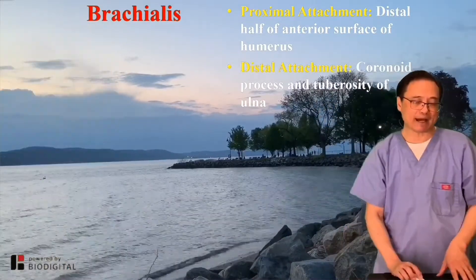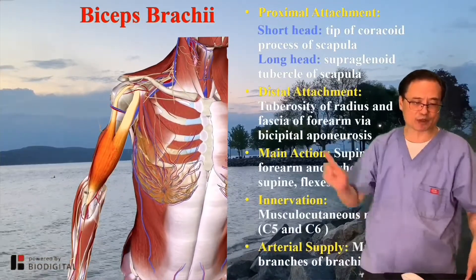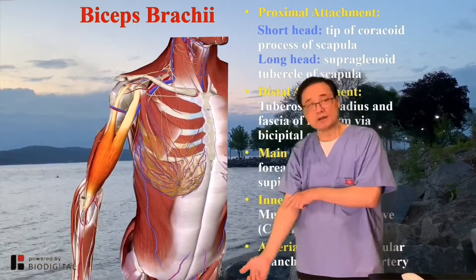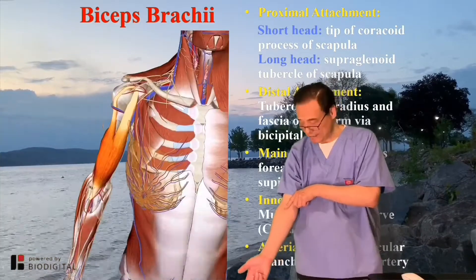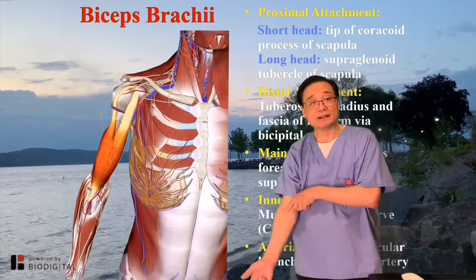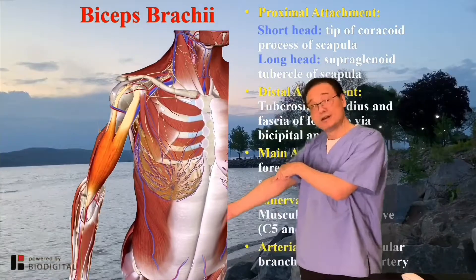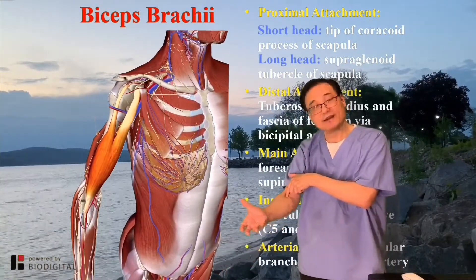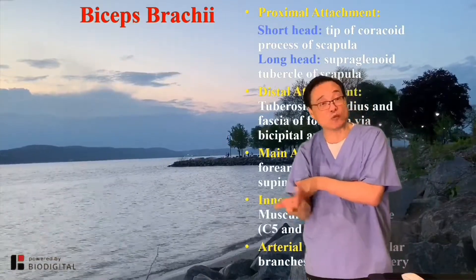Now remember when we talk about biceps — we mentioned it before — the distal attachment is the tuberosity of the radius. The tuberosity of the radius is not right in the center; it's slightly medial to the side. So when you have a muscle attached to the side there, when they contract, they're going to rotate the radius — they supinate the radius. That's why.